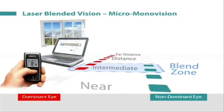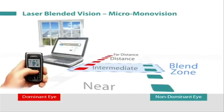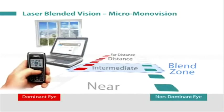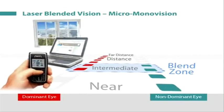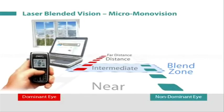The result is that good binocular near, intermediate, and distance vision can be achieved with a lower degree of anisometropia than traditional monovision, which we refer to as micro-monovision.